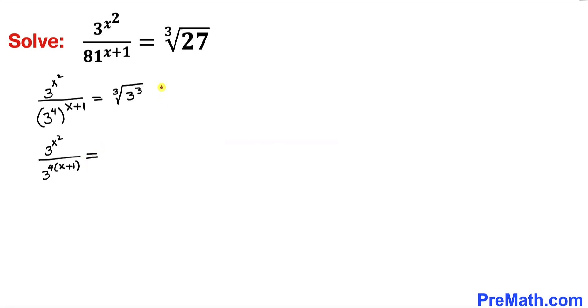Now let's look at this right-hand side. This cube root and this cube they undo each other. Therefore we are left with 3 on the right-hand side.